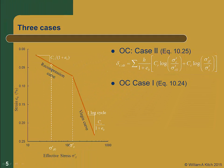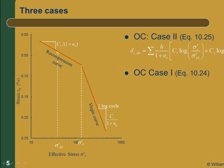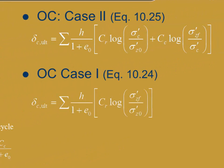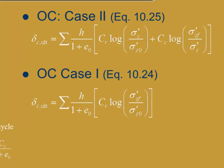The second case we'll call over-consolidated case 1. In this case, the soil is over-consolidated but the vertical effective stress is small enough that the soil will not reach the pre-consolidation stress sigma prime c — sigma prime zf will be less than sigma prime c. The soil will load only along the recompression curve from sigma prime naught to sigma prime zf. Our equation for consolidation settlement will have only a recompression term, including the log of sigma prime zf over sigma prime naught, since the stress path goes from sigma prime naught to sigma prime zf along the recompression curve. This is equation 10-24 in your text.